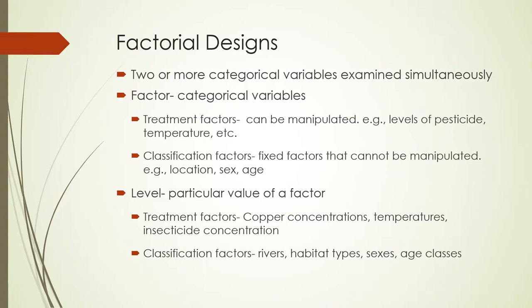Classification factors cannot be manipulated — you can't change the level of sex or location. The level refers to the particular value of a factor: different concentrations of copper, specific temperatures, or insecticide concentrations are treatment factor levels. Classification factor levels refer to the particular rivers, habitat types, ages, or sexes used in your experiment.